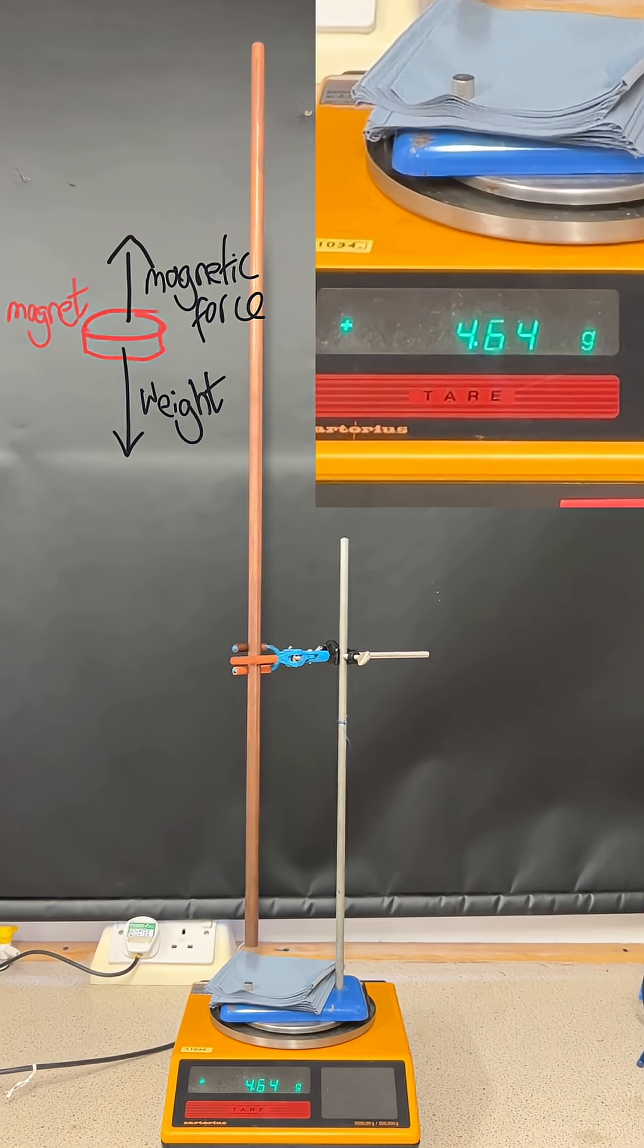This force up continues to increase as the magnet accelerates until it is equal to the magnet's weight, at which point the resultant force on the magnet is zero and the magnet falls at terminal velocity.